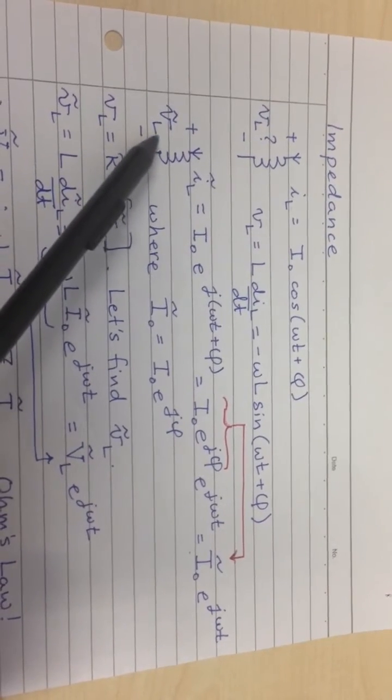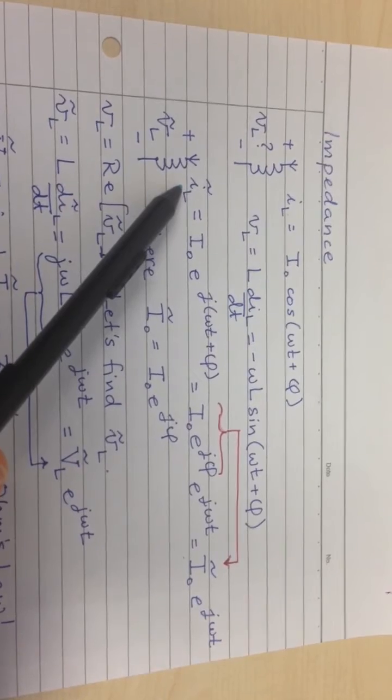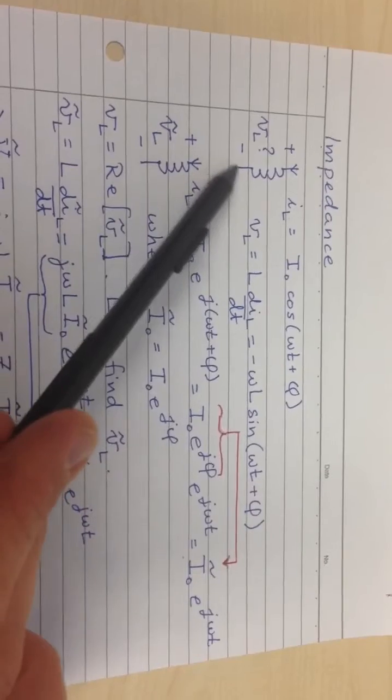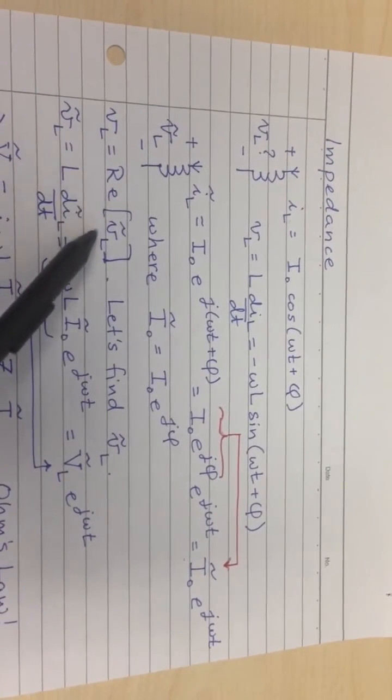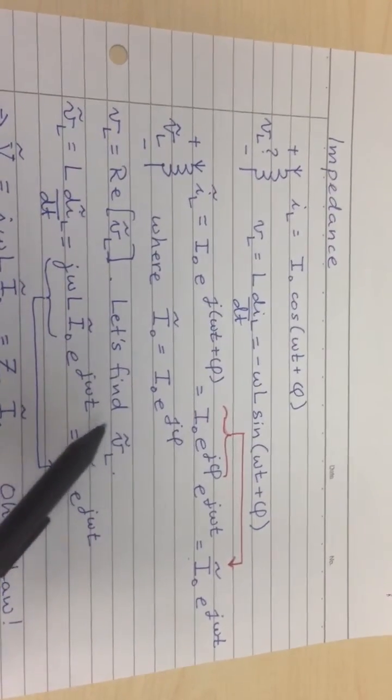Now, that of course is going to give you a complex voltage, which isn't very realistic. So just like we had to take the real part of the input to get the original input, we're going to have to take the real part of the voltage to get the answer in the end. So the answer is going to be the real part of this tilde voltage. So let's try to find the tilde voltage first.